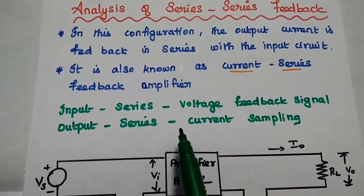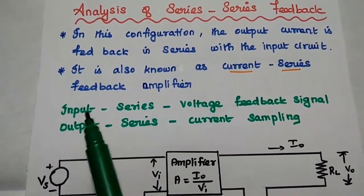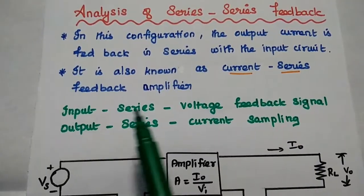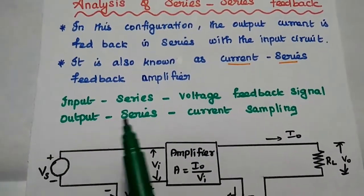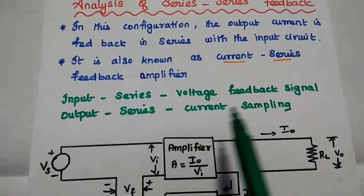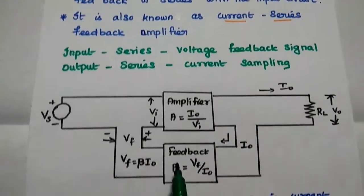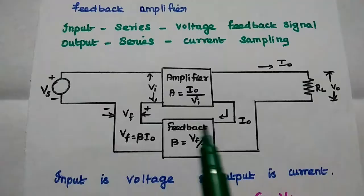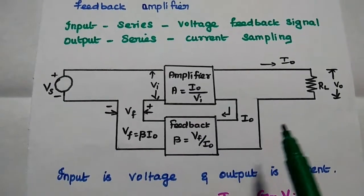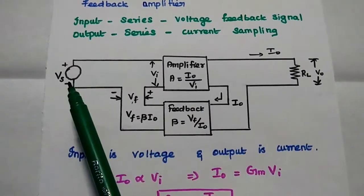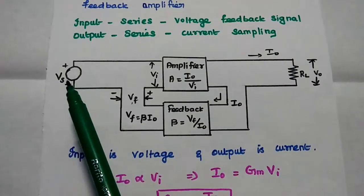In this series-series feedback method, the input as well as the feedback both are voltage. The output is a series type, meaning current sampling — the output signal is a current signal. This is the diagram of this series-series feedback amplifier. The input is a voltage signal, so we can use a voltage source. The feedback signal is also a voltage signal.